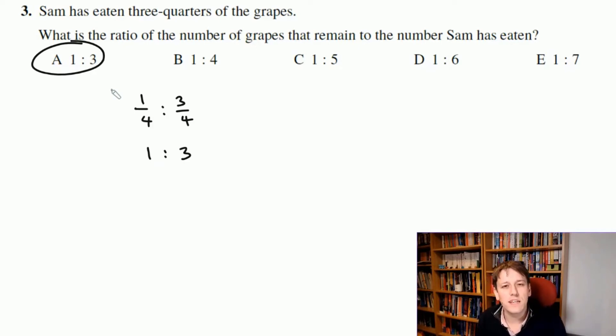The second way of thinking about it, and a really nice way of thinking about ratios questions in general, is that so long as the number of grapes is divisible by 4, it doesn't matter how many grapes I choose. I could imagine there were 100 grapes. He'd eaten 3 quarters of them which would be 75, and there'd be 25 left, so the ratio would be 25 to 75 which simplifies to 1 to 3. But I'd probably choose the smallest possible number divisible by 4, which is 4. If he had 4 grapes and eats 3 quarters, there'd be 3 eaten and 1 left, so that's a ratio of 1 to 3.